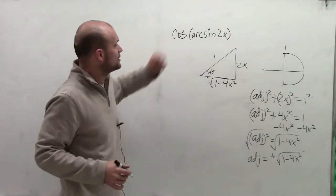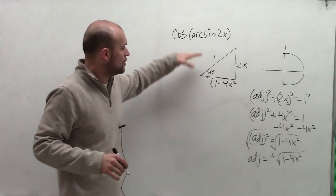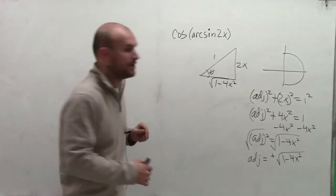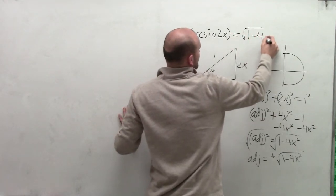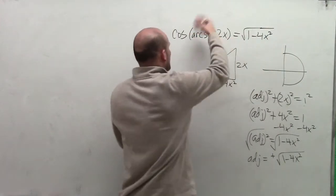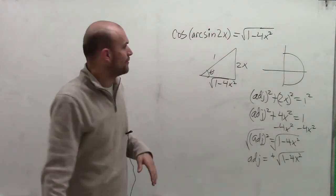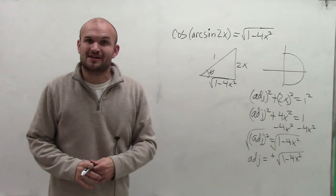And now I'm trying to determine what my cosine is. So the cosine is going to be your adjacent over a hypotenuse. So for this problem, it's just simply going to be the square root of 1 minus 4x squared divided by 1. But obviously, we don't need it divided by 1. So that will just leave us with our final solution. Thanks.